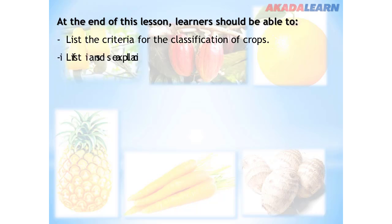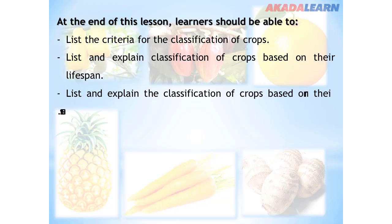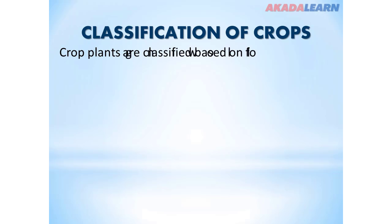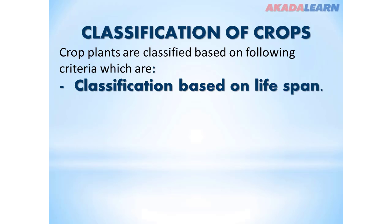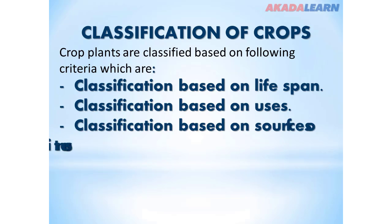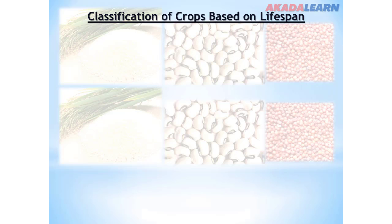Learners should be able to list and explain classification of crops based on their lifespan, list and explain the classification of crops based on their uses. Crop plants are classified based on the following criteria: classification based on lifespan, classification based on uses, and classification based on sources of essential nutrients.